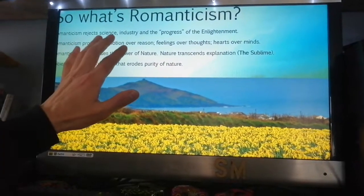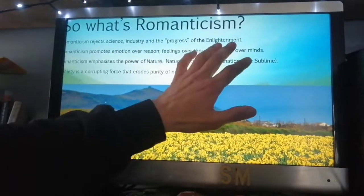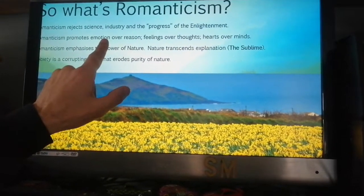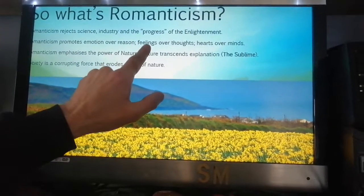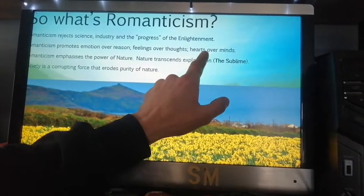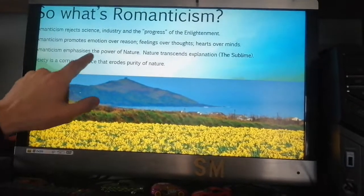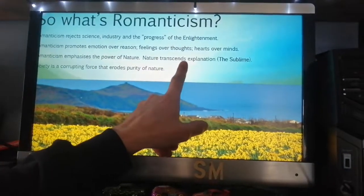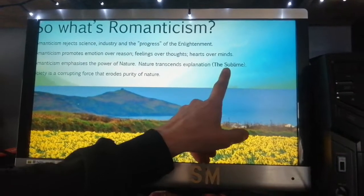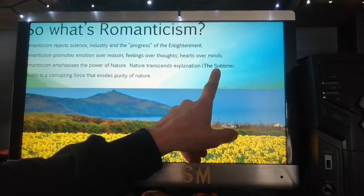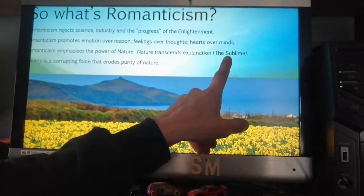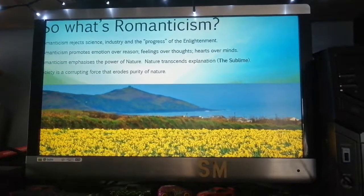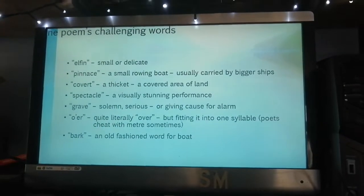Four bullet points very crudely compress Romanticism: first, Romanticism rejects science, industry, and the progress of the Enlightenment. Second, Romanticism promotes emotion over reason — feelings are more important than thoughts, hearts more important than minds and intellect. Third, Romanticism emphasises the power of nature — its sheer power and awe, which they believe transcends explanation; this is what we call the sublime. Fourth, society is a corrupting force that erodes the purity of nature.